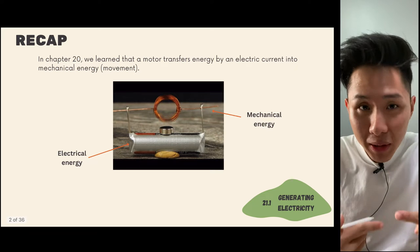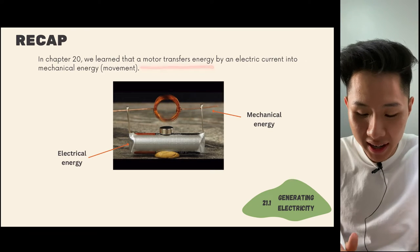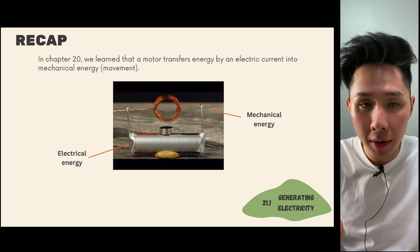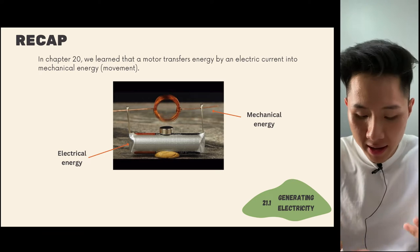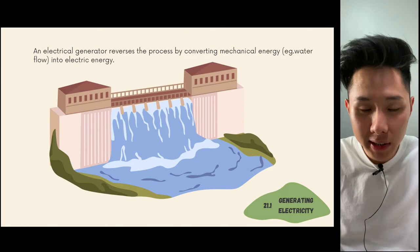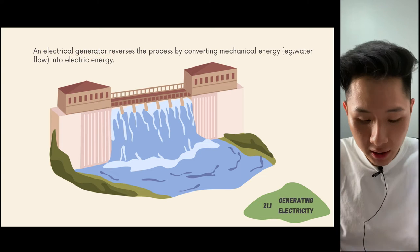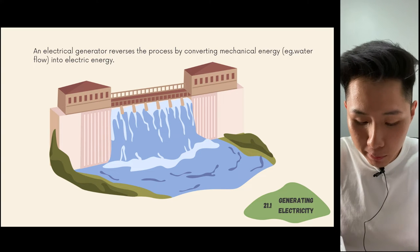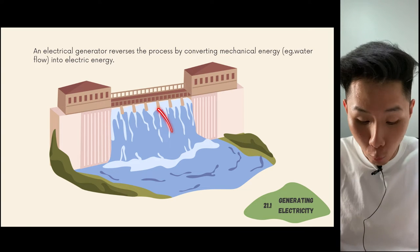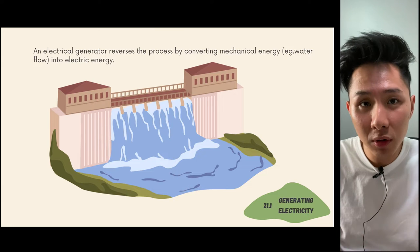In chapter 20, we learned that a motor transfers energy by converting electric current into mechanical energy and movement. In this chapter, we're trying to reverse the process by using something called a generator — converting mechanical energy, for instance water flow, into electrical energy.